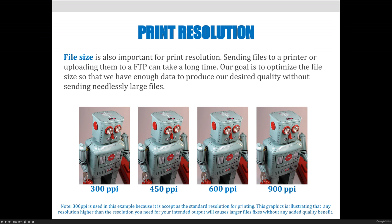Because anything above that determined resolution will do the same thing that happens for web — it'll increase the file size, and in theory it will increase the quality. But as I look at all these images, the one at 300 PPI and the one at 900 PPI look identical. I can't see any better image. I'm just increasing the file size and kind of wasting my time in doing so.